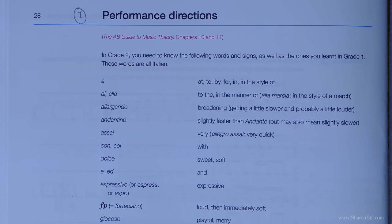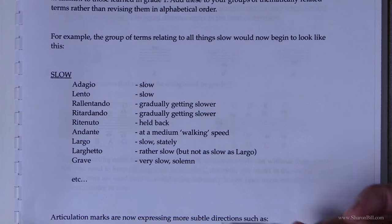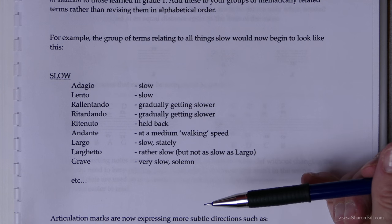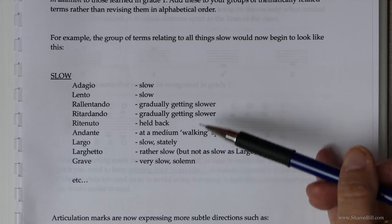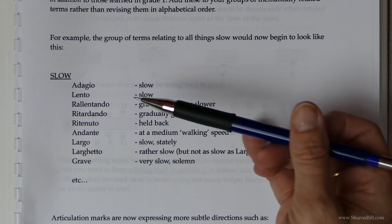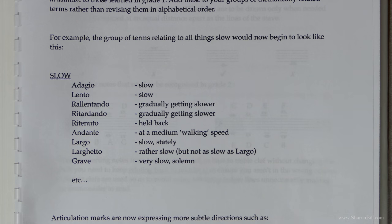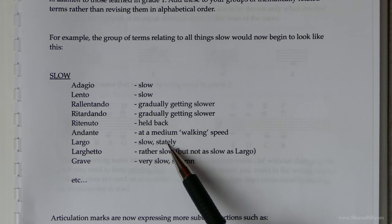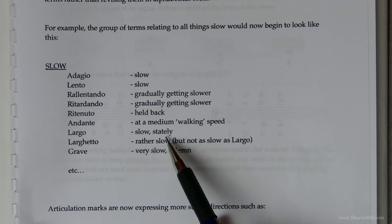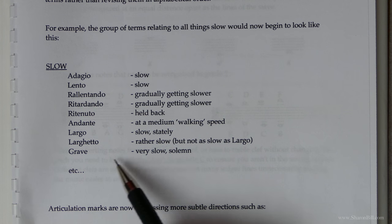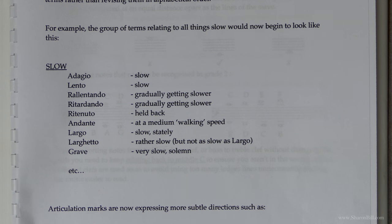I suggest that you group things thematically. Combining all of the Grade 1 words and all of the Grade 2 words that are anything to do with slow tempo — if you group all of those together you'll begin to notice some common denominators. You'll see that adagio and lento mean slow; largo also means slow but it's a more stately sort of slow; larghetto is rather slow but not as slow as largo; grave means very slow or solemn.